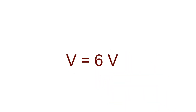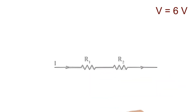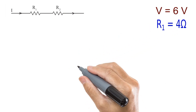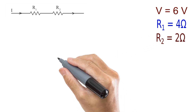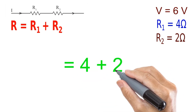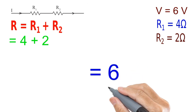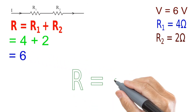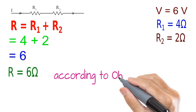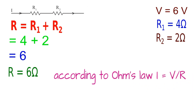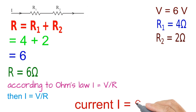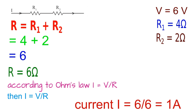Now, voltage equals 6 volts. R1 is 4 ohm and R2 is 2 ohm. Effective resistance R = R1 + R2 = 4 + 2 = 6 ohm. Current I = V divided by R. Therefore, I = 6 divided by 6 = 1 Ampere.